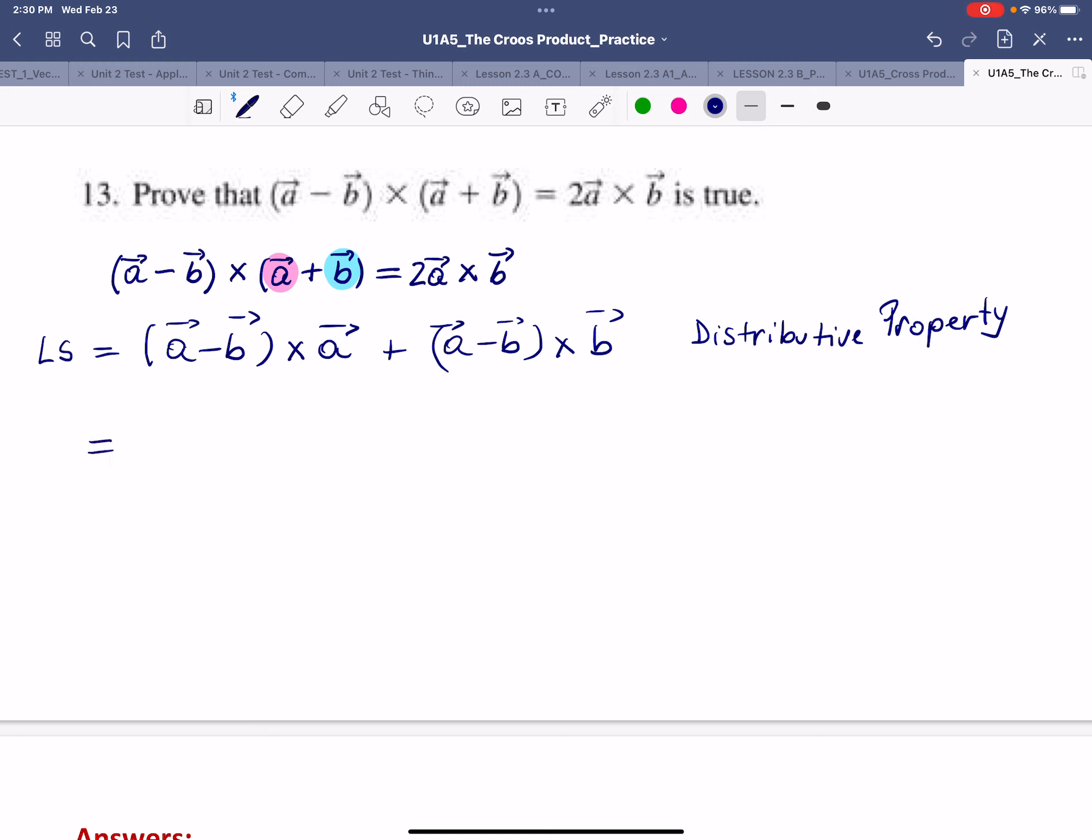Now again, we have the cross product of two vectors, and we can apply the distributive property once more. So in this case, we'll have vector A crossing both A and B. So we have vector A cross A, and then minus B cross A.